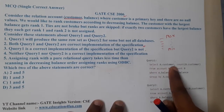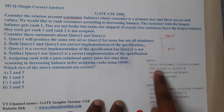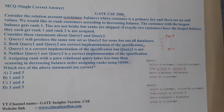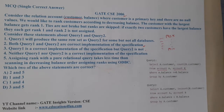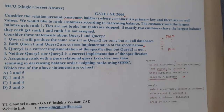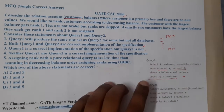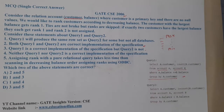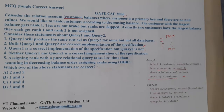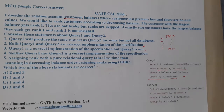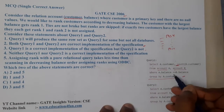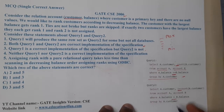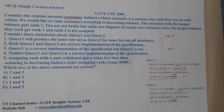Query one: SELECT a.customer_name, COUNT(b.customer) FROM account a, account b WHERE a.balance <= b.balance GROUP BY a.customer_name. Query two: SELECT a.customer_name, 1 + COUNT(b.customer_name) FROM account a, account b WHERE a.balance < b.balance GROUP BY a.customer_name. The key difference is query one uses less-than-or-equal and no +1, while query two uses strictly less-than with +1.